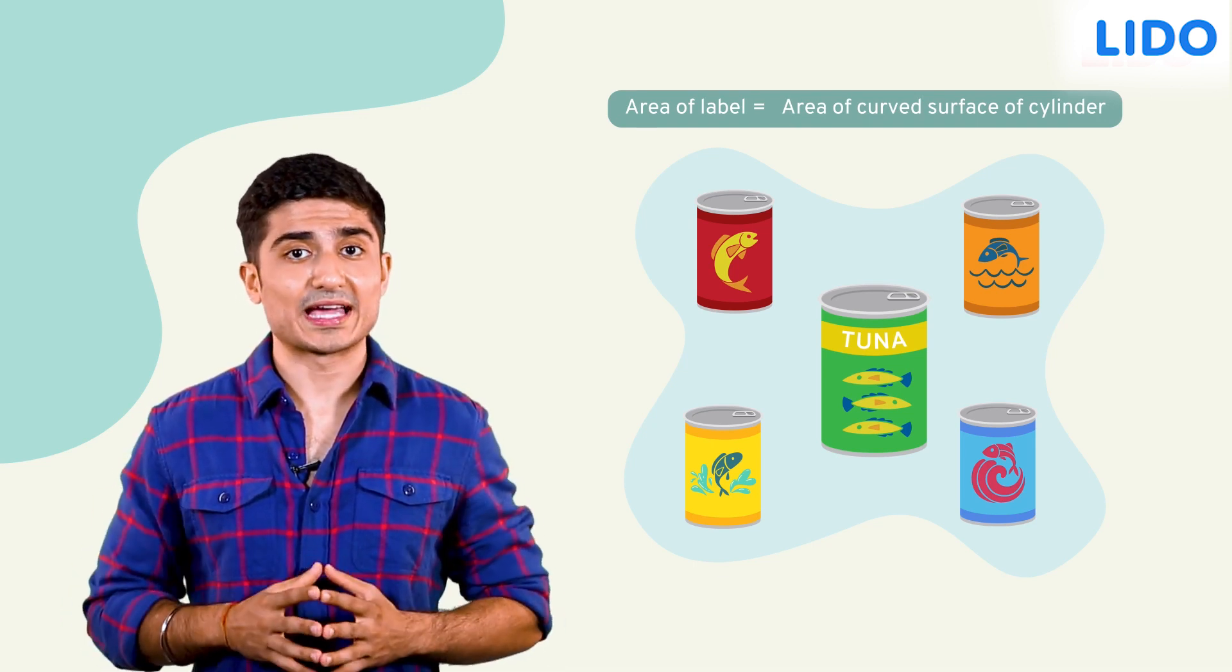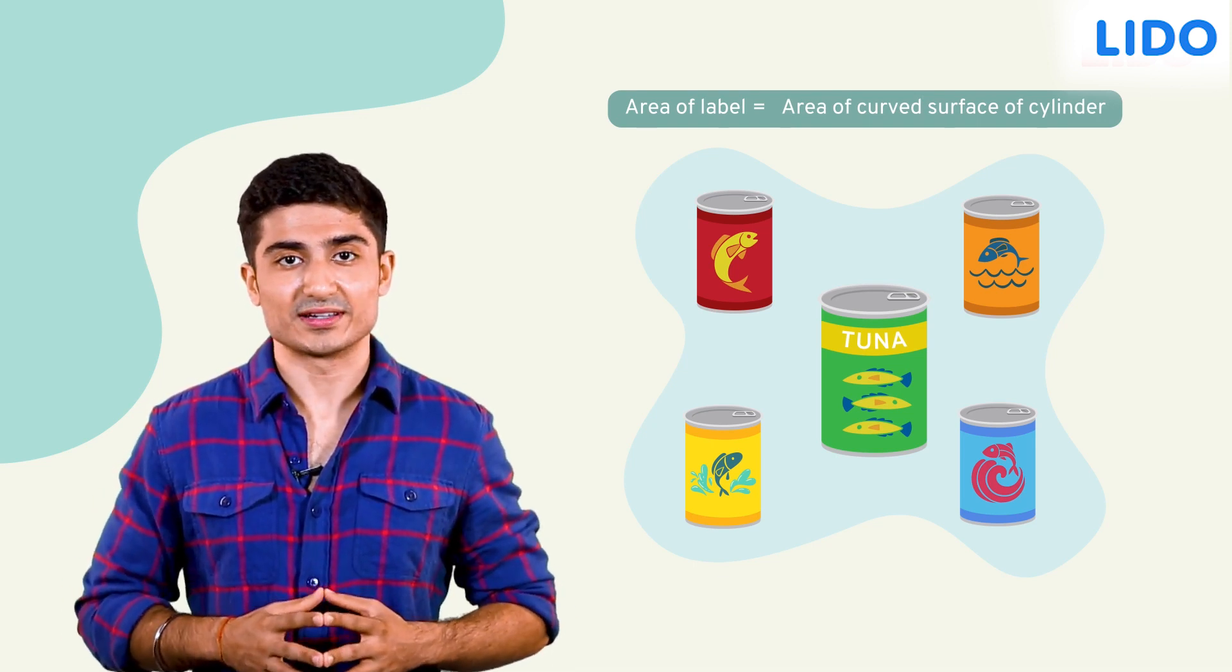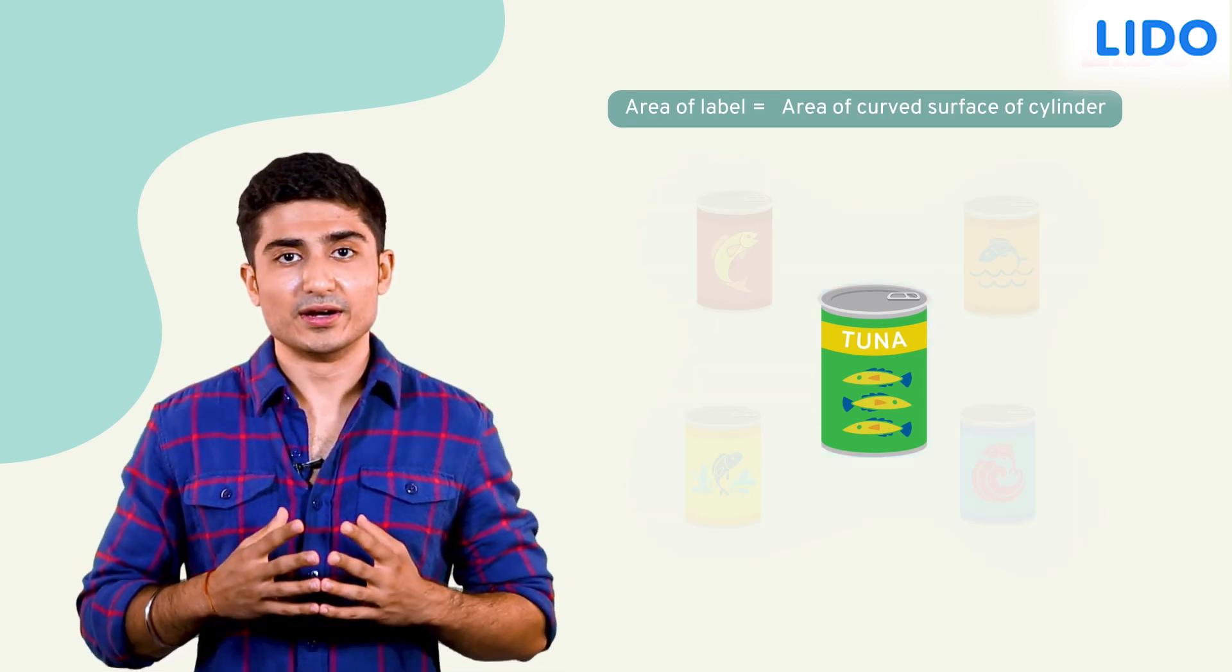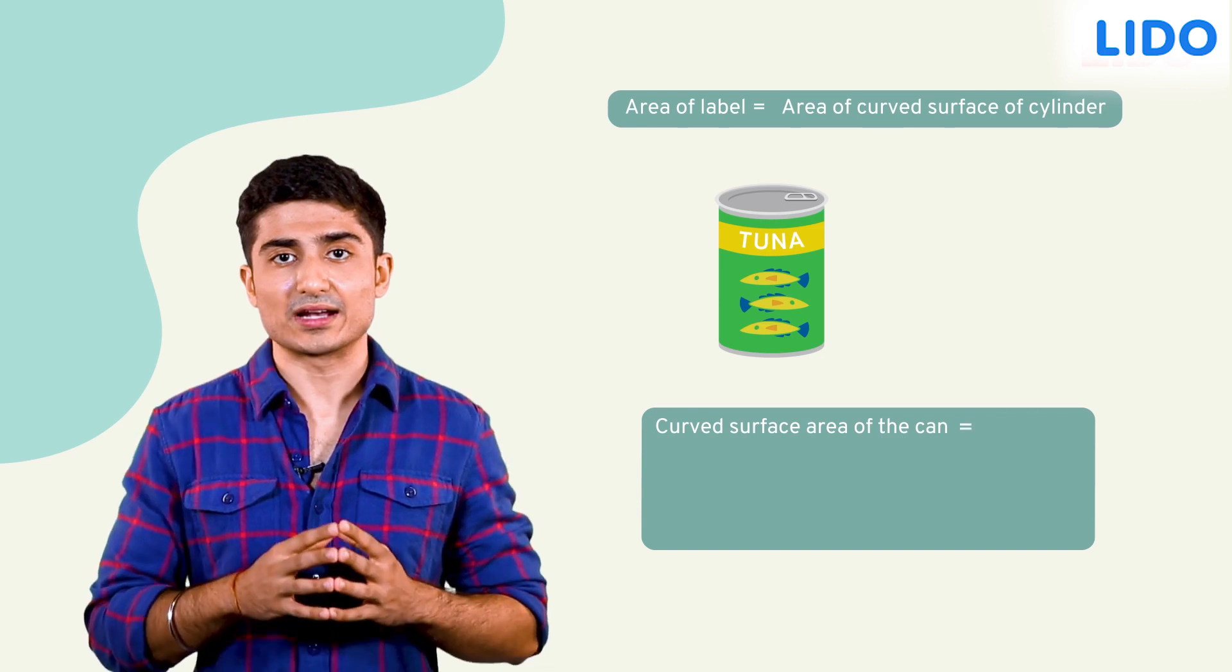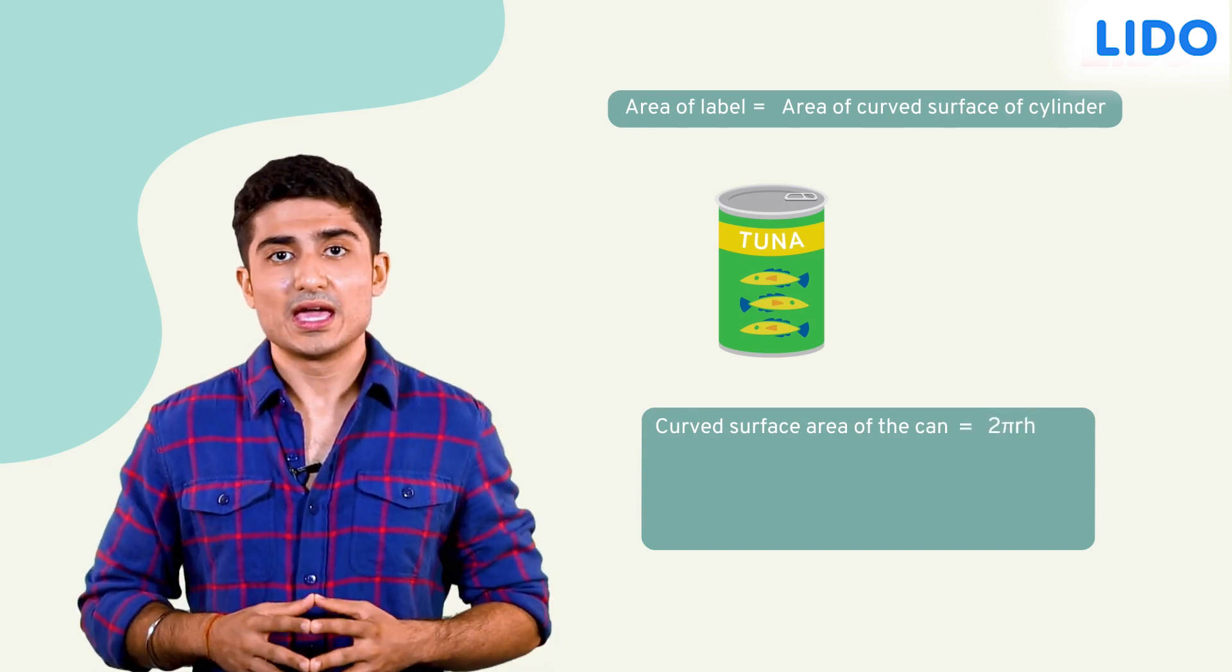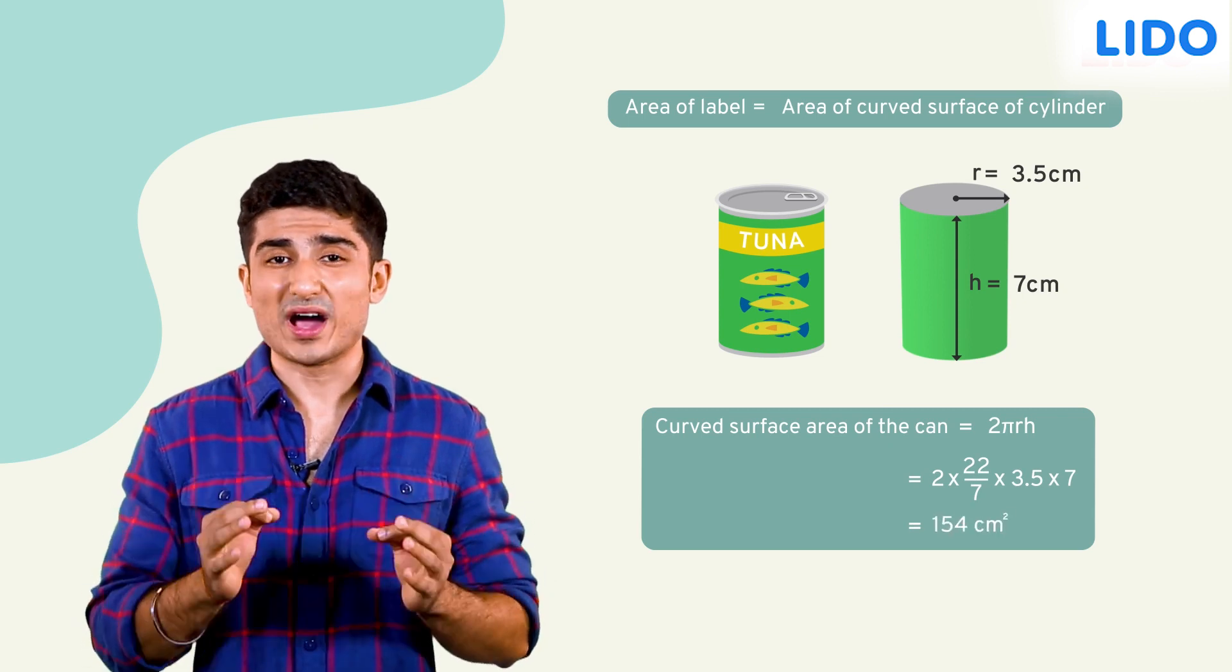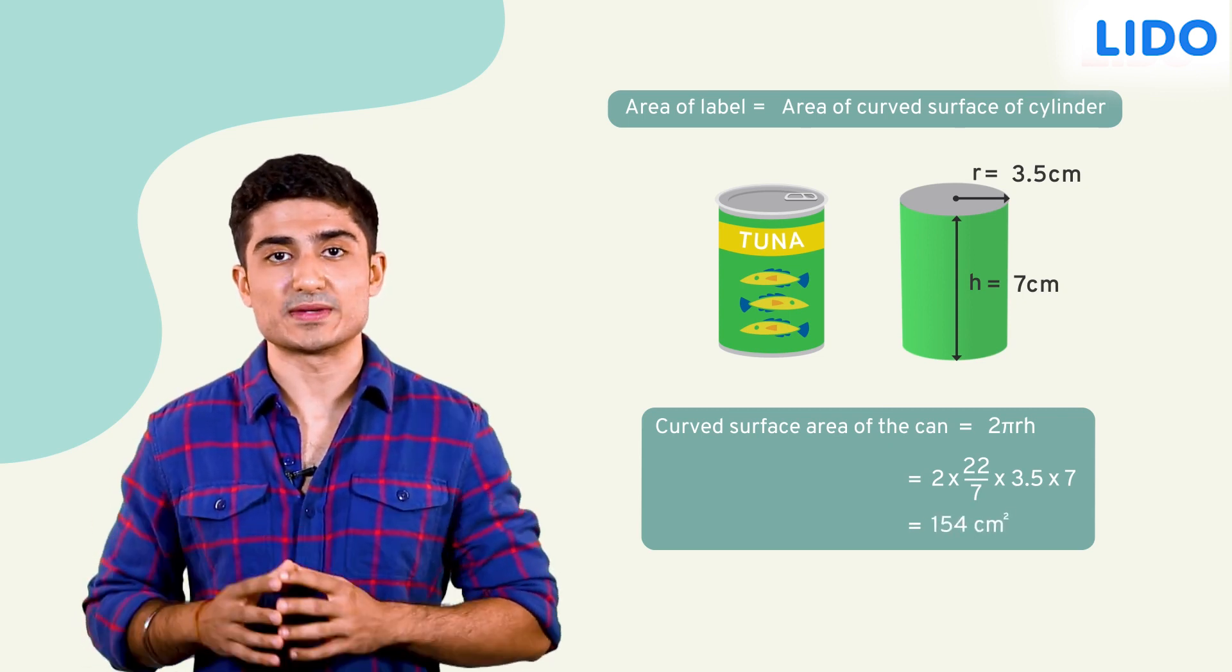But I've already done this calculation while finding the total surface area. Let me dig it up. Here it is. The curved surface, also known as the lateral surface area, is calculated as 2πrh. Thus, my brand label will cover an area of 154 square centimeters.